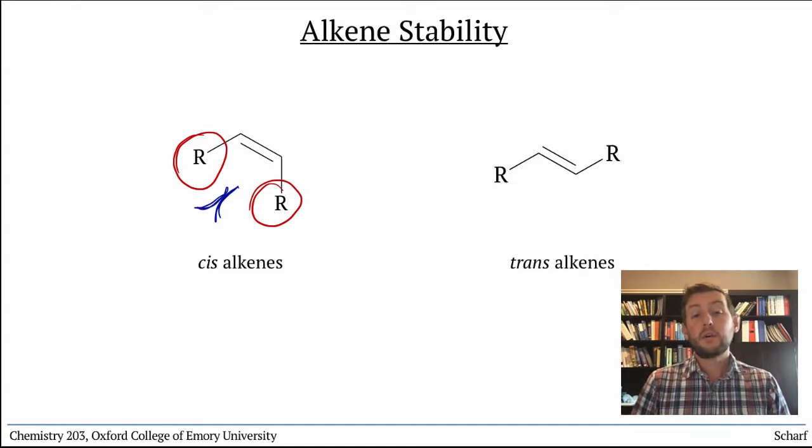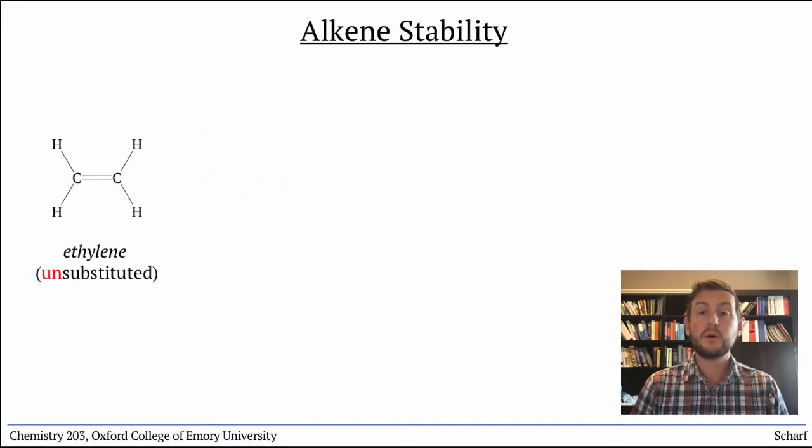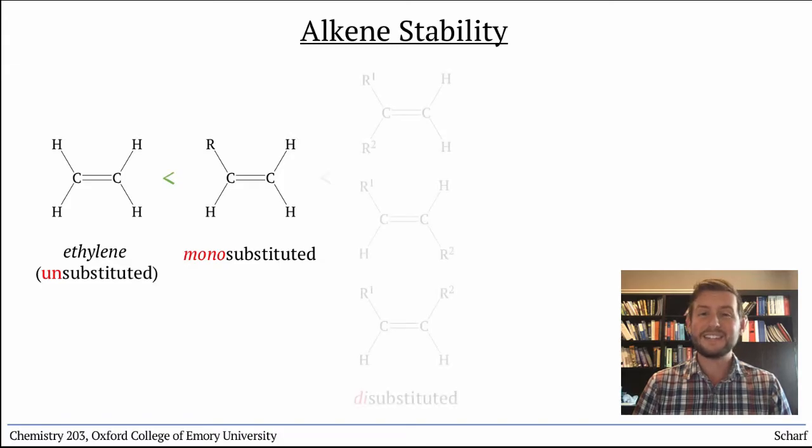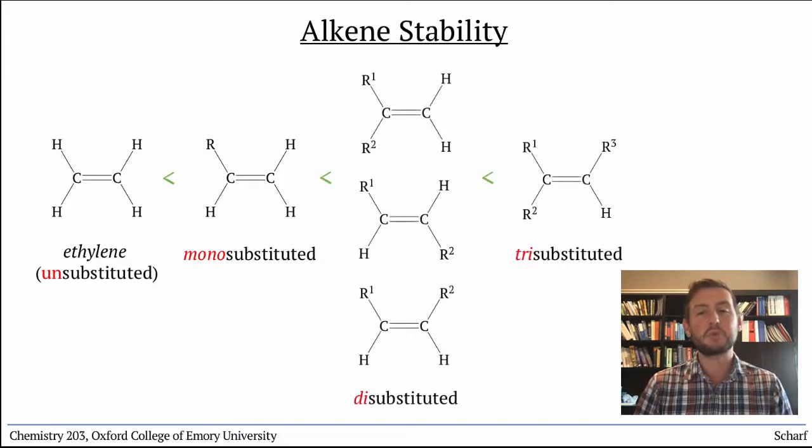There are also stability trends based on the substituents on the alkene. The more non-hydrogen substituents, the more stable the alkene. So the unsubstituted ethylene is less stable than monosubstituted alkenes, which are less stable than disubstituted, trisubstituted, or tetrasubstituted alkenes.